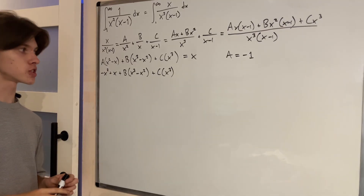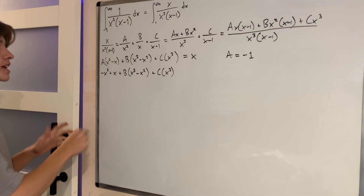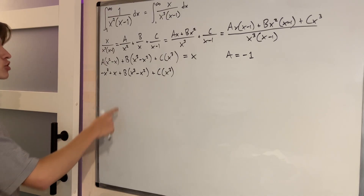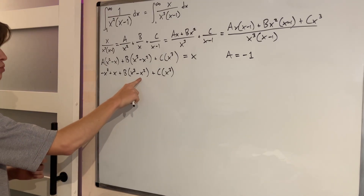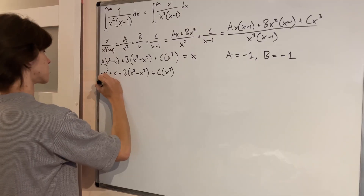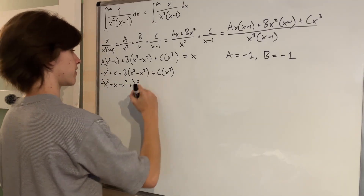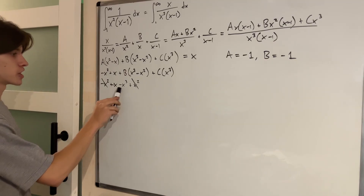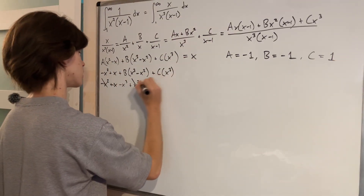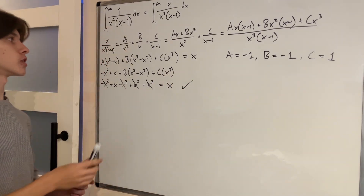We have two x squared terms and two x cubed terms, so they have a chance of canceling out if we choose the right signs. For b, we have to choose negative 1, because then the x squared term becomes positive and cancels with the negative x squared from a. So b equals negative 1. Then c has to be positive 1 because we have a negative x cubed and we want only x to remain. So c equals 1, and the x cubed terms cancel. We get x equals x — so these are the right choices for our partial fraction decomposition.